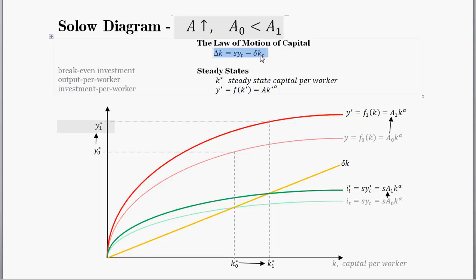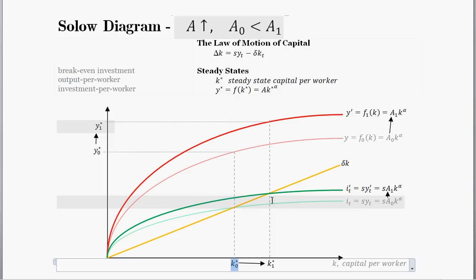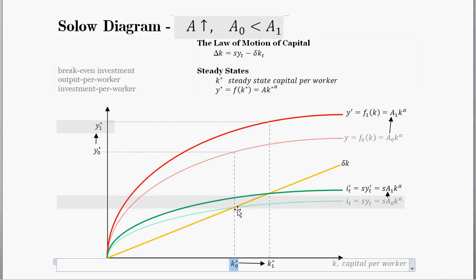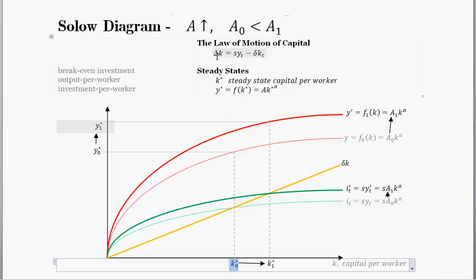What's it going to look like? We start at the old intersection, and then things shift up. Starting at the initial capital per worker level, the new investment line is above the breakeven investment line. The difference between investment and breakeven investment is the change in capital. Because investment is above breakeven investment, there's a positive increase in capital each period. You'll see capital stock increase period after period, with delta K positive, converging towards the new steady state — a slow, asymptotic transition to the new steady-state value.